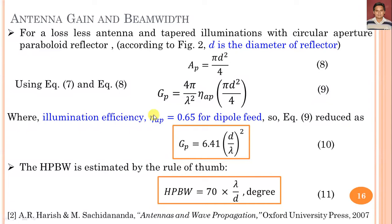Aperture efficiency is sometimes also called illumination efficiency. The half power beam width (HPBW) can be estimated by the rule of thumb: HPBW = 70·(λ/D) degrees. This formula differs slightly from that for uniform distribution on aperture antennas. For non-uniform distribution on the reflector antenna, the beam width formula gives 17·(λ/D) degrees as one reference value.